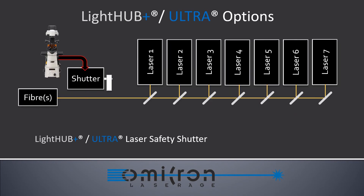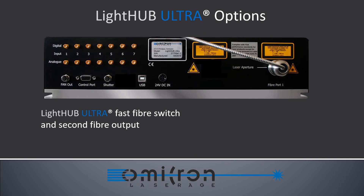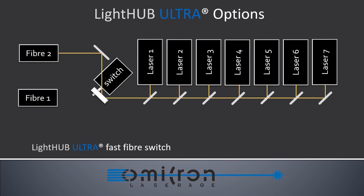The optionally available laser safety shutter, controlled by the microscope's interlock output, blocks the light. The LightHub Ultra can be equipped with an additional second fiber output, addressed by either a fast fiber switch or a fixed fiber splitter. The fast fiber switch guides the light to either fiber output one or fiber output two, conveniently controlled by an external TTL control signal, with a switching speed of about five milliseconds.